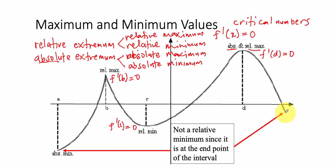This point, however — Point E — is at the end of the interval. The interval is A to E. Since this is not the highest or the lowest point, it is not Absolute Maximum or Absolute Minimum. And since it is an end point, it cannot be Relative; Relative must be in the middle, not at the end point. So even though Point E is at the bottom, it is not Relative Minimum because it is at the end point.